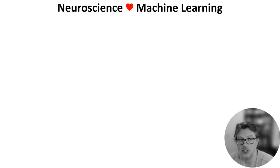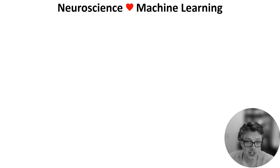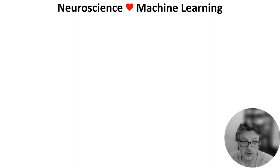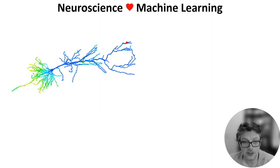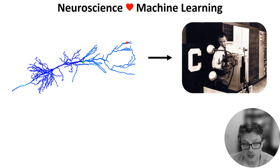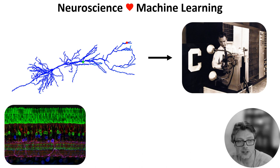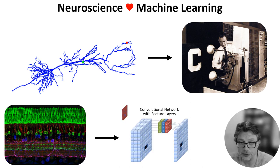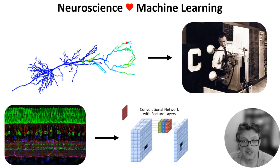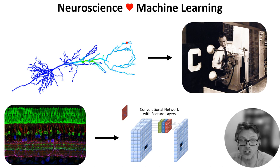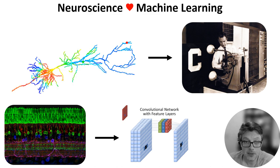One reason is that machine learning and neuroscience have had a really rich history of influencing each other — from the neuron to the perceptron, or from the retina to the convolutional neural network. In recent years they have started to drift apart, but that could change, and knowing a bit of neuroscience could help with that.